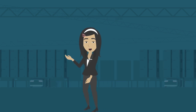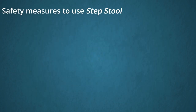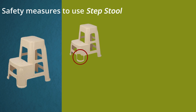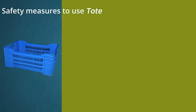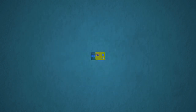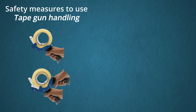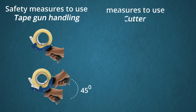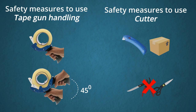Safety measures for other tools — step stool, tote, tape gun, and cutter: for the step stool, don't use a damaged one, don't overstretch while accessing the rack, and climb one step at a time. For the tote, use both hands and provisions provided to lift it, stack totes in a stable manner, and don't drag the tote. For the tape gun, ensure it is in good condition, and lift it upright at 45 degrees to cut tape. For the cutter, use only safety knives; strictly do not use substandard tools such as Asha blades, retractable cutters, or knives.